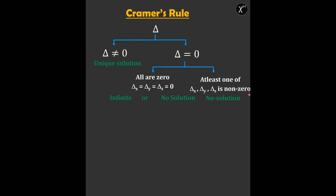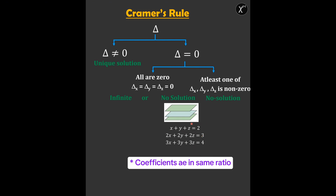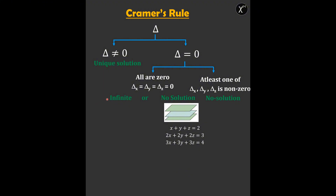We can extend this further. For the no solution case, this can only arise if the three planes are parallel. For example, in this system of equations we can easily see that these three planes are parallel because the coefficients are equal and the constants are not equal. This is similar to the parallel lines case.